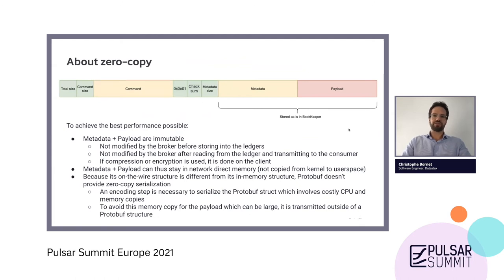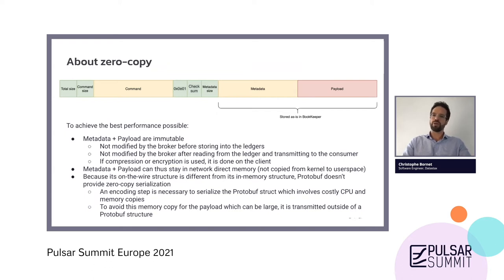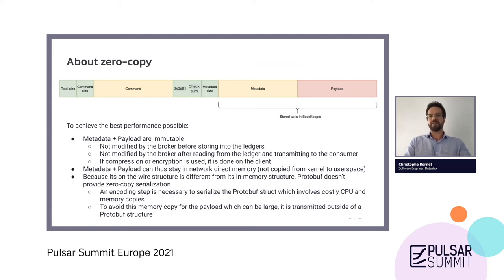To achieve the best performance possible, we need to avoid copying memory from region to region. To do that, the message inside the protocol is an immutable part. So once it's constructed by the client, it will not be modified by the broker when it receives it, and it will be transmitted as-is to the ledgers.